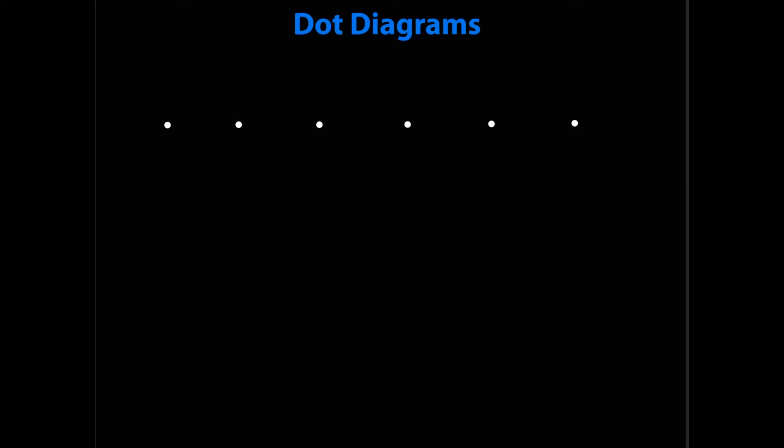The evenly spaced dots mean the object moved at a constant velocity. Note that this dot diagram does not indicate what direction the object was moving — we'll fix that a little later. Since the timing was evenly spaced and the object moved at constant velocity, it was covering the same distance for every time period that passed. Now, for the second dot diagram on the screen, the spacing starts very close together on the left and gets longer and longer — the time between dots is the same.